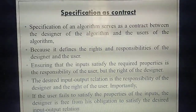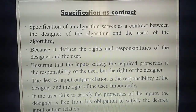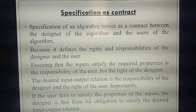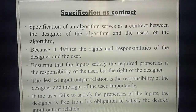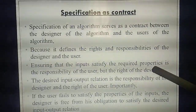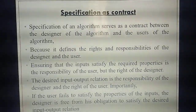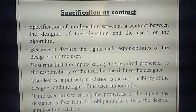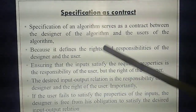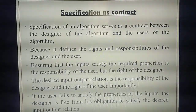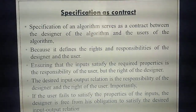This is a simple example. In algorithm or software design, likewise, the person says some requirements based on their needs — that is their rights and responsibilities to the designer. Based on that, the designer needs to design the algorithm. The input satisfying the required properties is the responsibility of the user. All the requirements need to be satisfied by the designer — that is the designer's right.